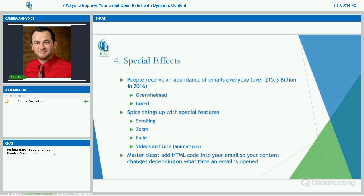Number four is special effects. People receive an abundance of email every day — over 215.3 billion emails were sent in 2016. Needless to say, we are all pretty overwhelmed with emails, and most of them are boring. We delete them instantly, before even opening. So the subject line is important, but getting into the email, you want to make it a little different from what everybody else is doing. Instead of what we used to send — long emails, just words, no images, no video — those days are kind of over, especially for younger generations.